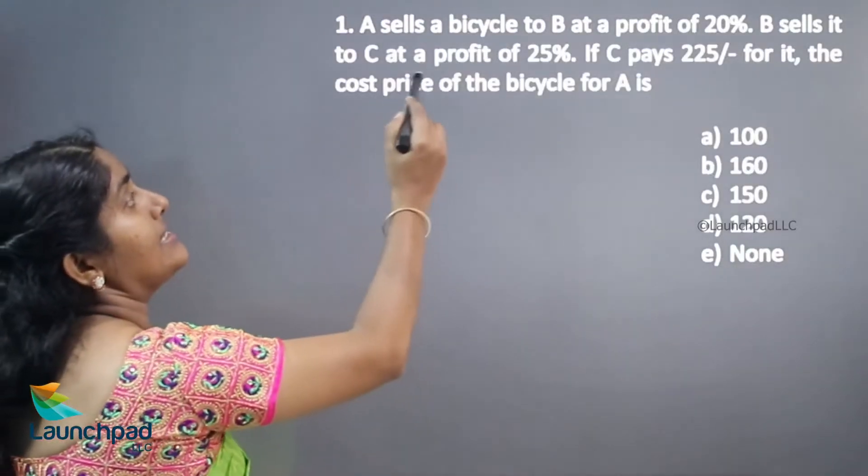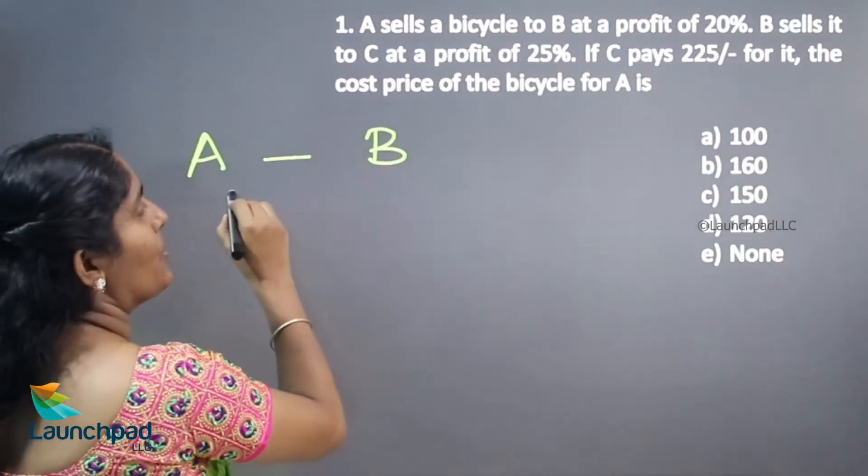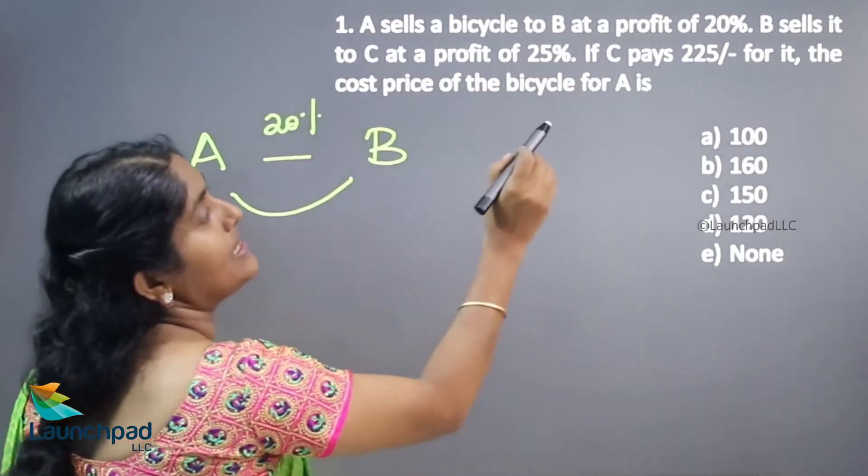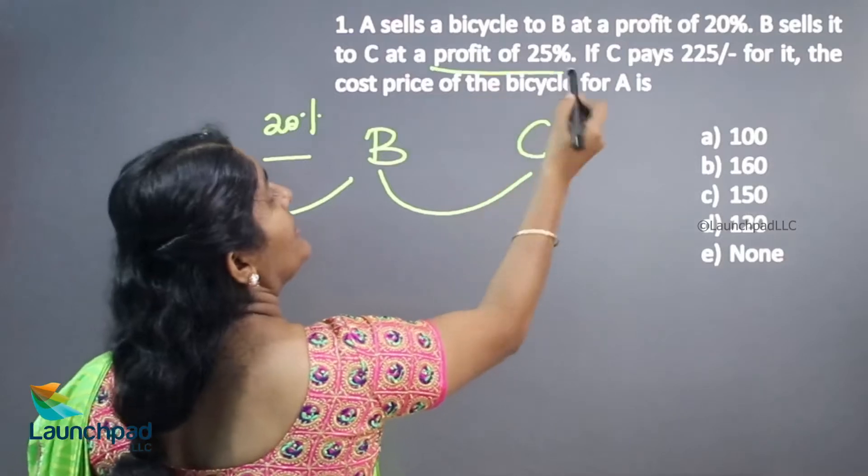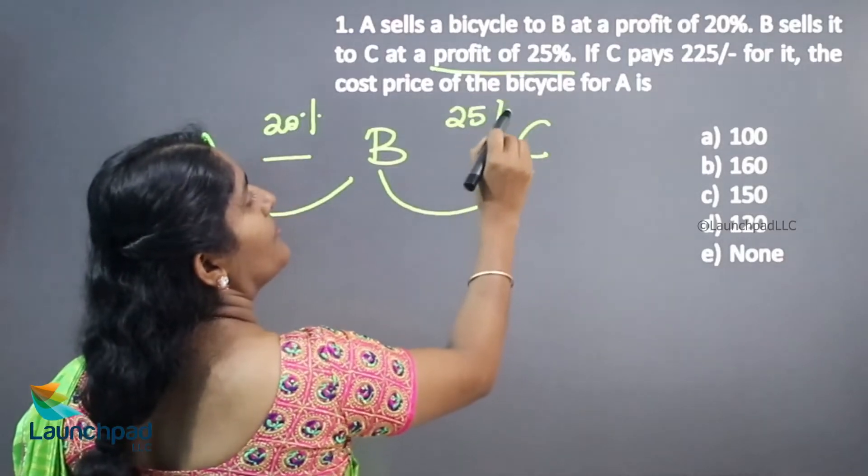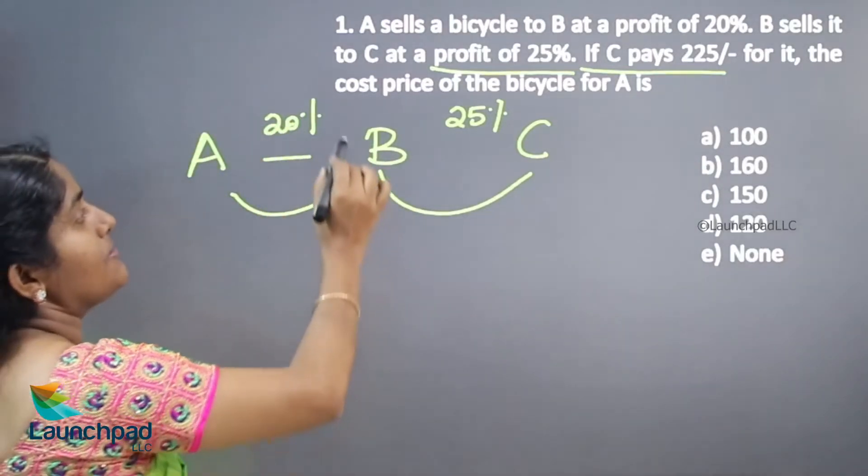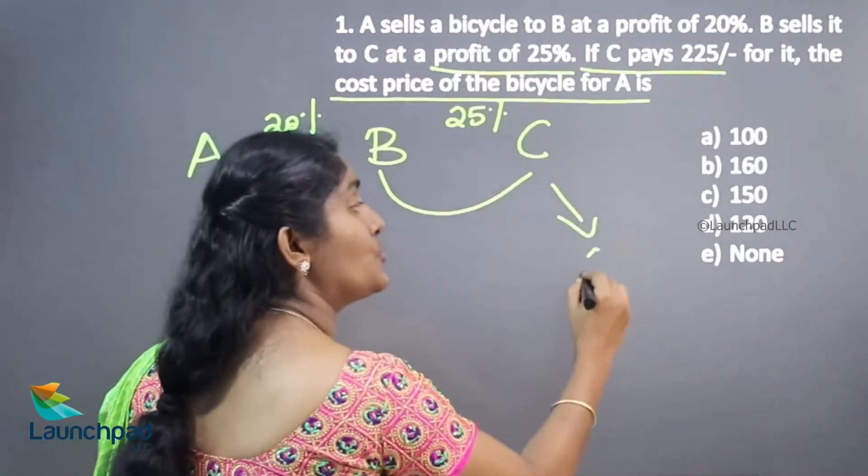Hello everyone, in this video we are going to see the next type of profit and loss concept. Your question is: A sells a bicycle to B at a profit of 20%. Now B sells it to C again at a profit of 25%. If C pays 225 rupees for it, the cost price of the bicycle for A is what? C paid 225 rupees.